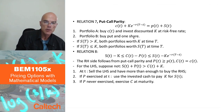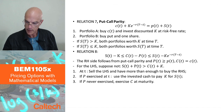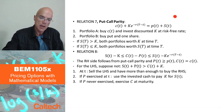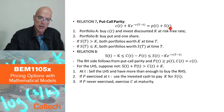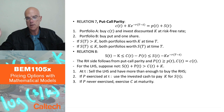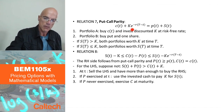Relation 7 is called put-call parity — another well-known result from option theory. It says that for European options, the price of the European call plus the discounted strike price equals the price of the European put plus the price of the underlying. This is for a call and put on the same underlying S, with the same strike price K and same maturity T. They are related in a linear way.